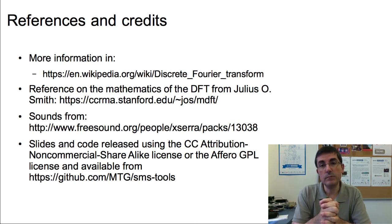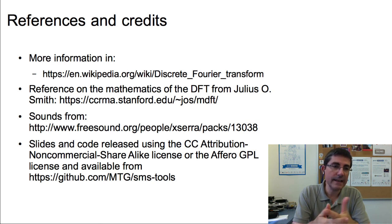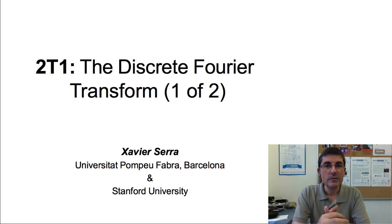You can find more information on the DFT in Wikipedia, and of course in the website of Julius Smith. And from now on, on all our lectures we will use sample sounds, so all will come from Freesound, and they can be obtained from this link. And again the standard Creative Commons and GPL licensing of the code that we will be using. So we have shown and explained the DFT equation. I hope you realize that it is not such a complex thing. But even if you feel it is complex, its use in audio signal processing is huge. So it is worth spending some time with it. We will continue with the DFT in the second part of this lecture. So thank you for your attention, and I see you next class.